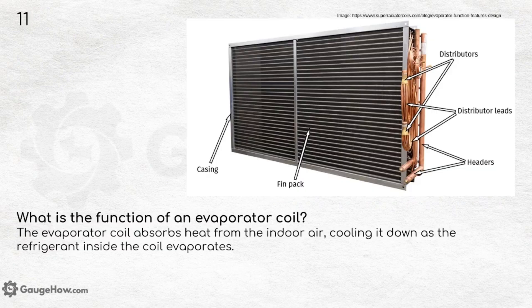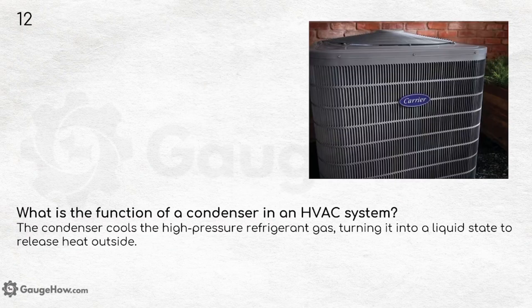What is the function of an evaporator coil? The evaporator coil absorbs heat from the indoor air, cooling it down as the refrigerant inside the coil evaporates. What is the function of a condenser in an HVAC system? The condenser cools the high-pressure refrigerant gas, turning it into a liquid state to release heat outside.